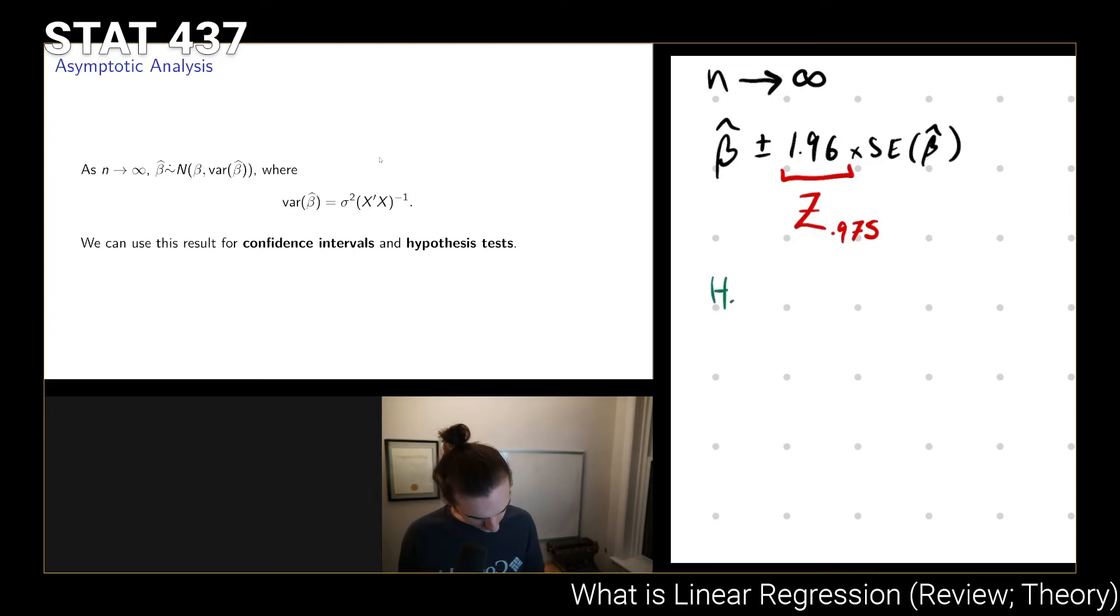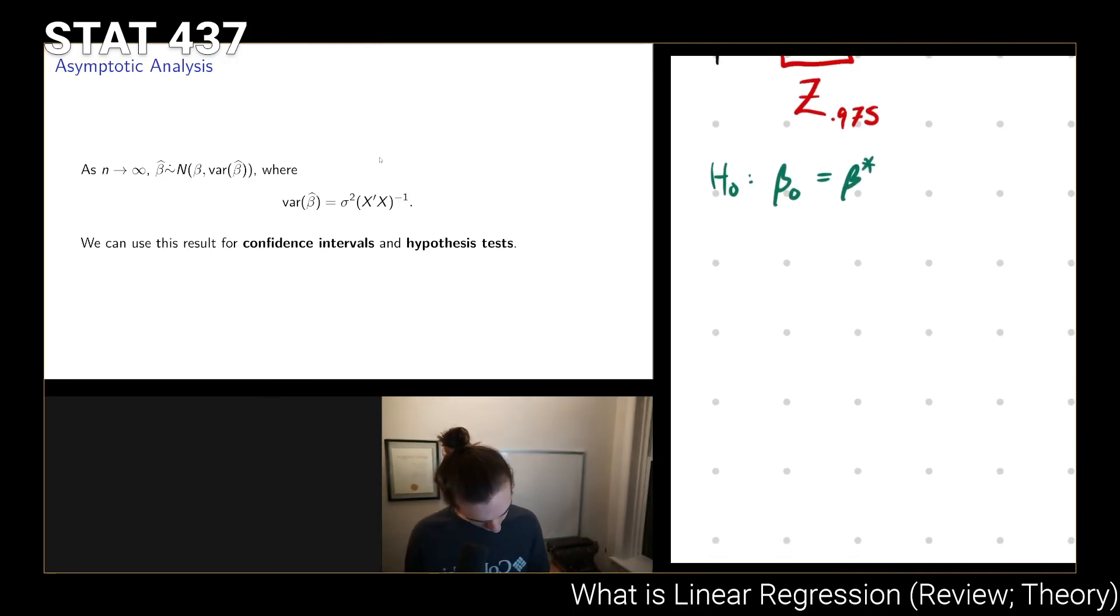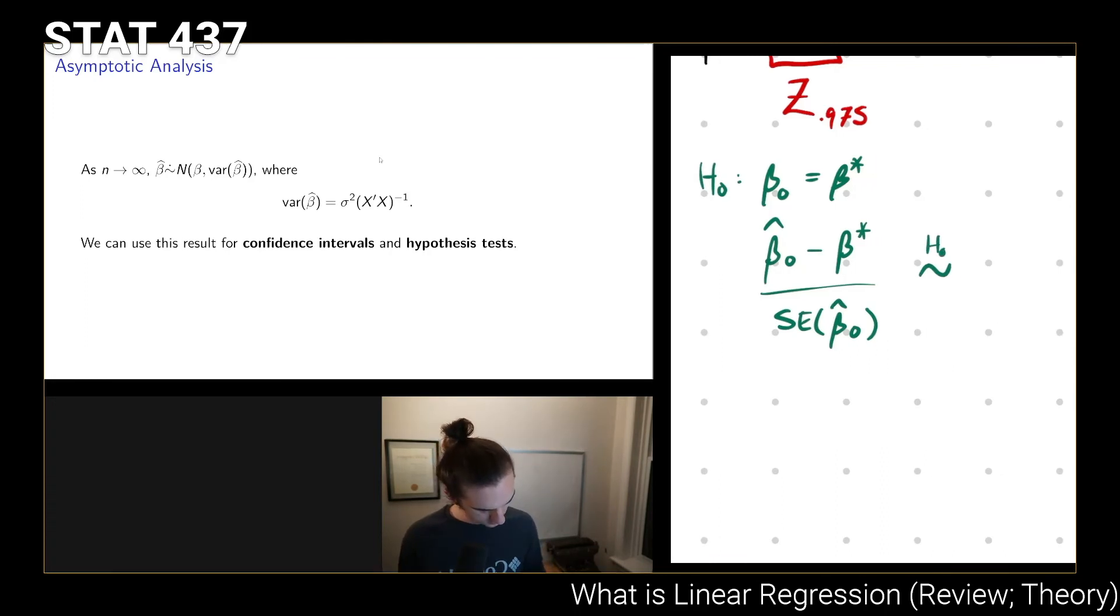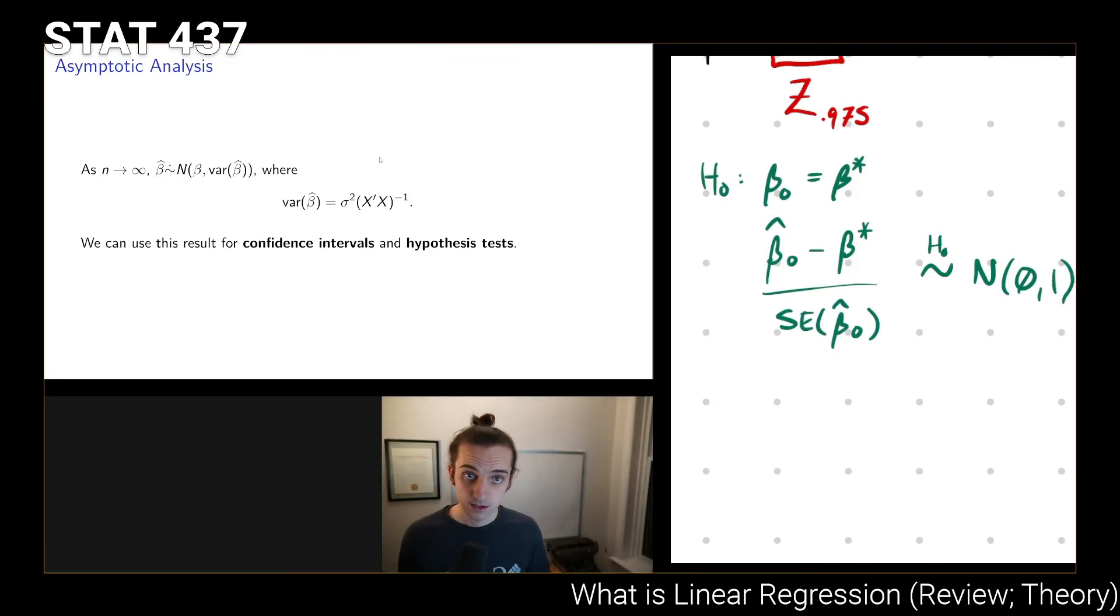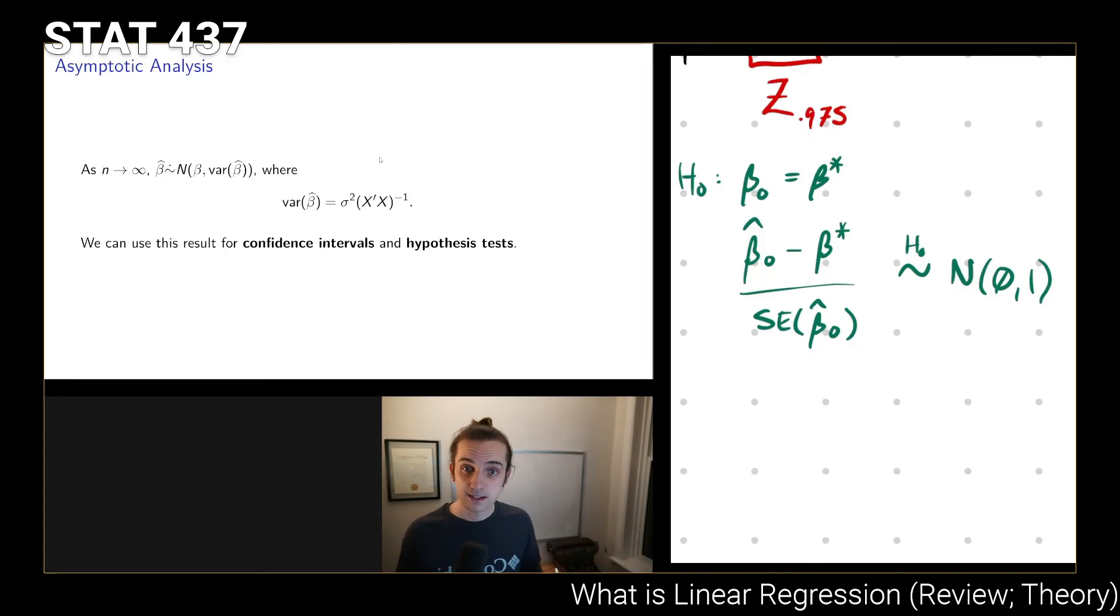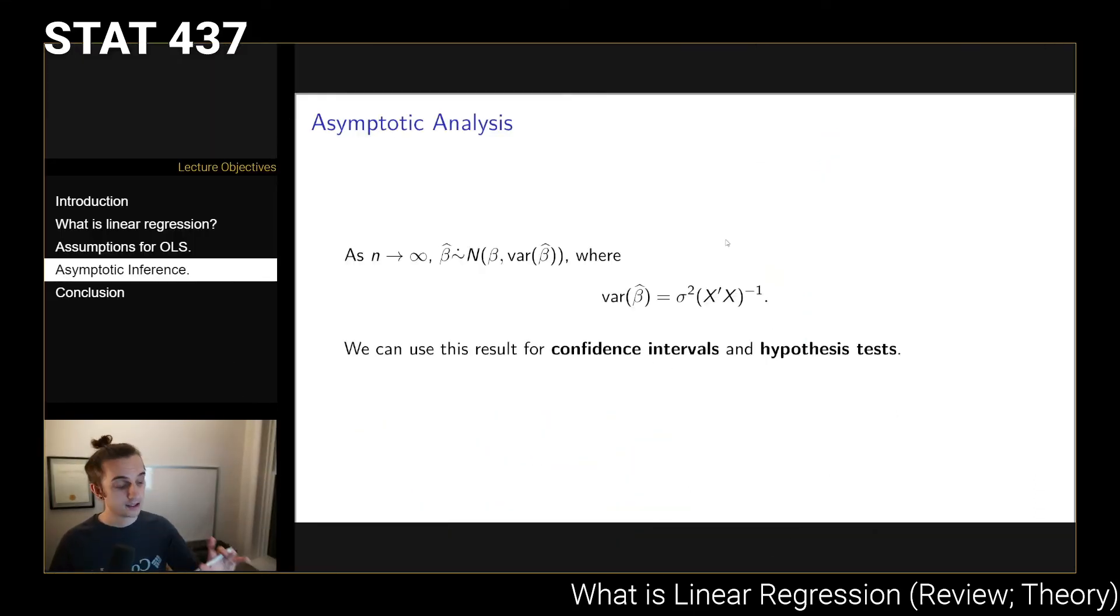If we want to test the null hypothesis that beta0 is equal to beta*, then we could take (beta0 - beta*) divided by the standard error of beta hat 0. And under the null hypothesis, this is going to be approximately distributed as a standard normal random variable. So all of these types of hypothesis tests, these t tests, the types of things that you're used to seeing and testing when you're looking at regression analysis, all of that comes from this asymptotic analysis.